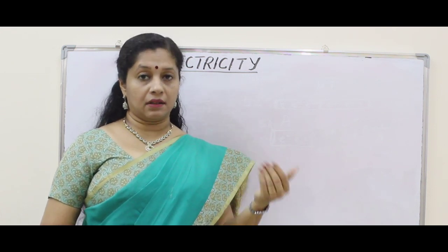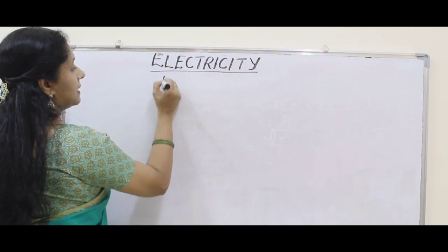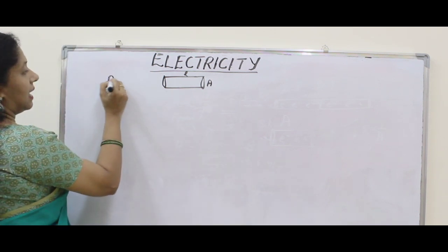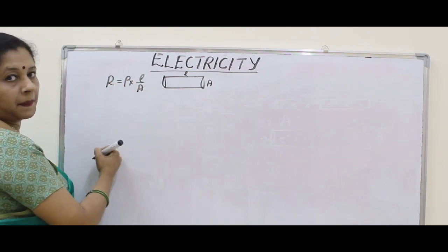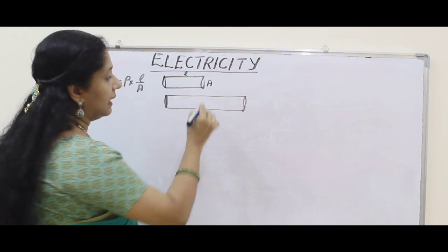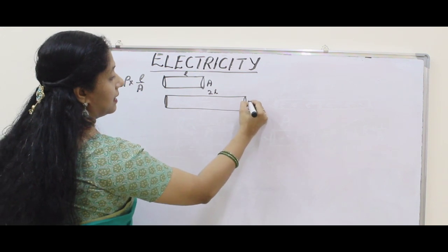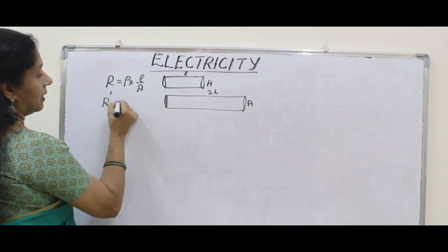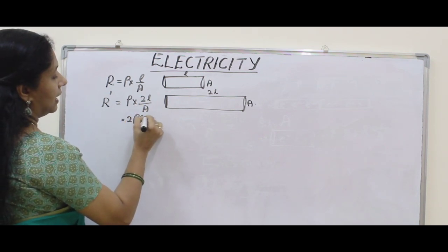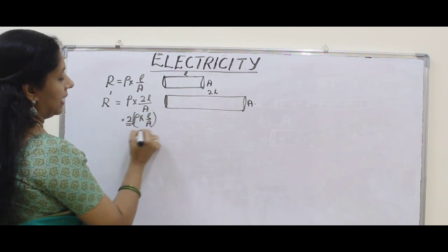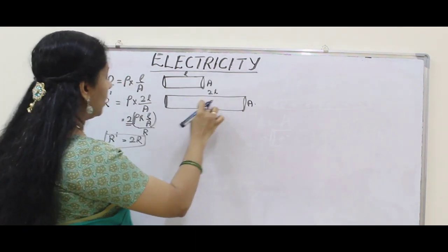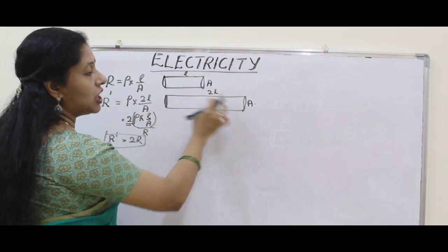Now we will see some important concepts regarding this equation. Suppose we have a wire with length L and area of cross section A, so R = ρL/A. If we keep the same area but double the length, L becomes 2L. Then R' = ρ × 2L / A = 2 × (ρL/A) = 2R. So when we double the length without changing the area, resistance also doubles.